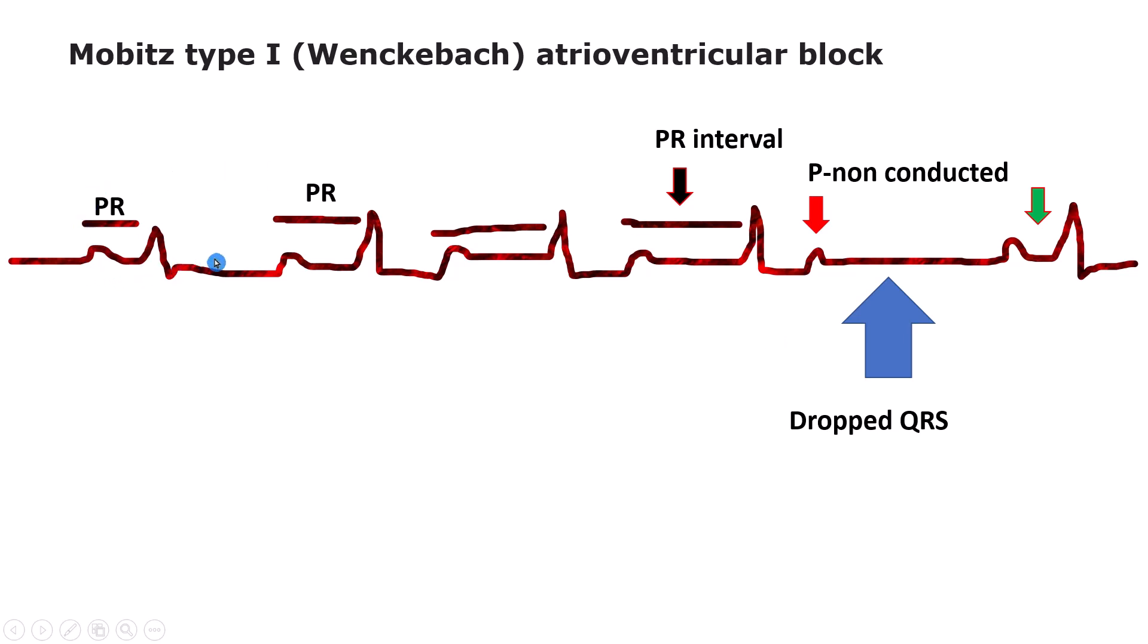Anytime you encounter an ECG with this type of group beating, you should suspect AV Wenckebach block and look for the diagnostic pattern of lengthening PR intervals and the presence of a non-conducted P wave. Do not mistake group beating due to blocked premature atrial complexes for second degree AV block. In premature atrial complexes, the non-conducted P waves come early; in AV block, the P waves come on time.